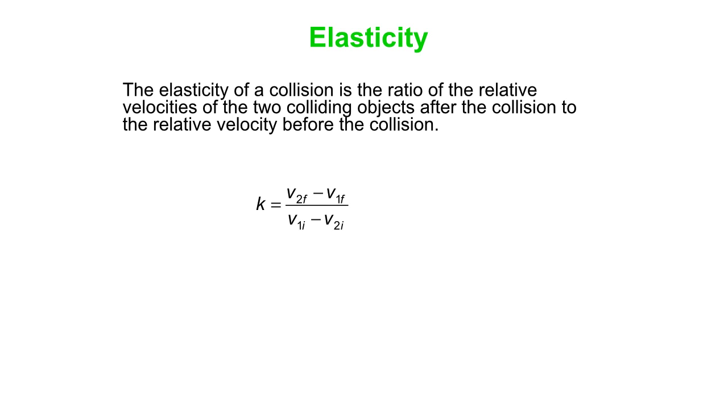First we'll talk about elasticity. This is the ratio of the relative velocities of the two objects after the collision to the relative velocities they have before the collision. Our elasticity parameter is k, it's dimensionless.